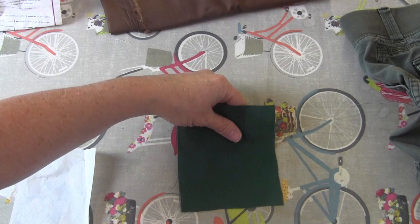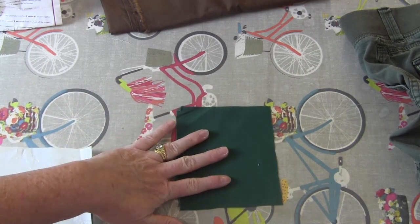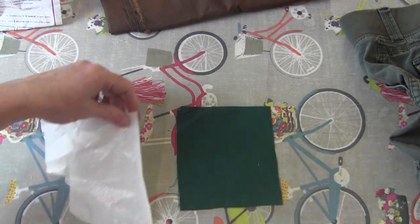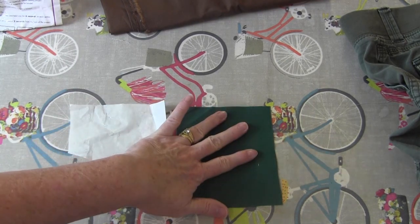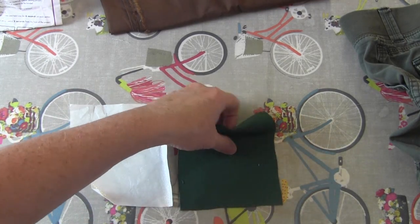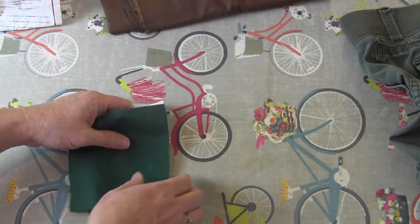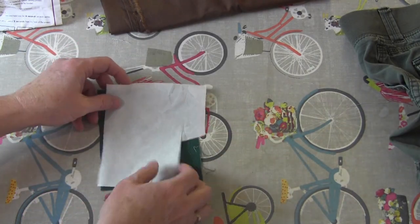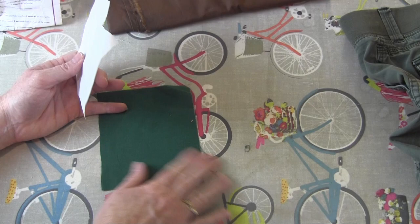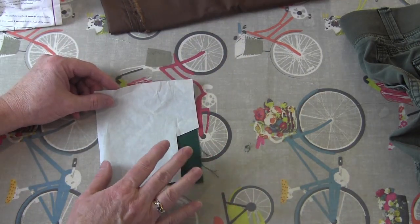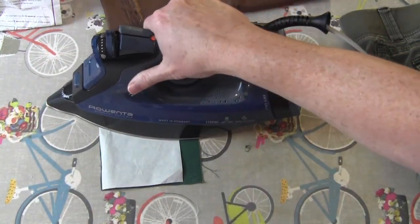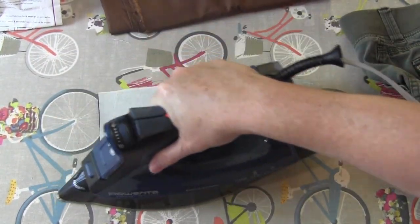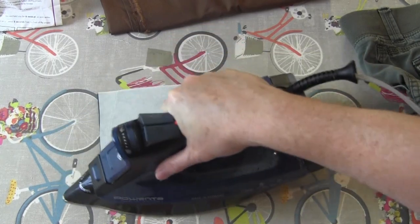Next, cut a piece of fabric that's big enough to cover your holes and then cut a piece of heat and bond the same size as the fabric. Place the fabric with the wrong side up and then put the heat and bond on top with the paper side facing up. Use your iron to adhere the heat and bond to the piece of fabric.